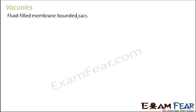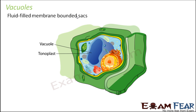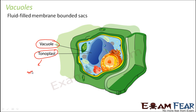These are fluid-filled, membrane-bound sacs. They are quite big in size in plant cells — like huge vessels filled with fluid and surrounded by a membrane. In a plant cell, the most prominent structure you can see is a vacuole. The membrane which surrounds the vacuole is called the tonoplast.